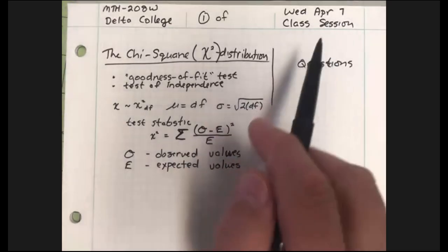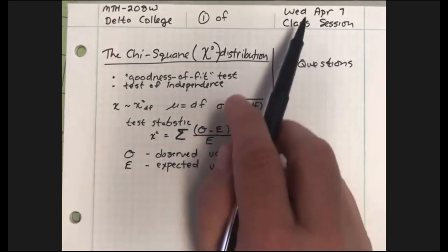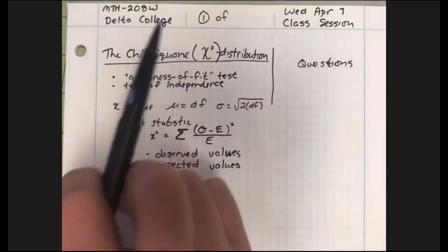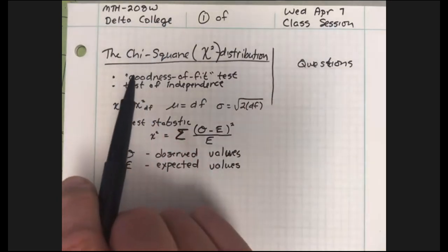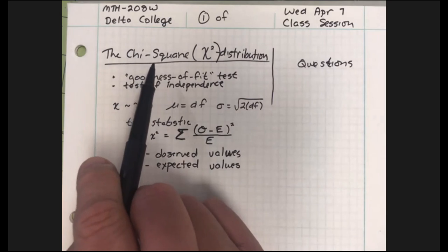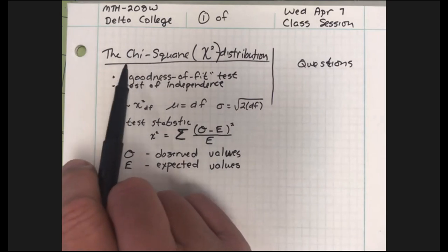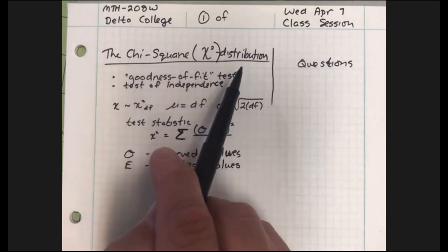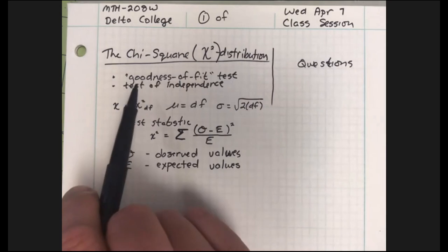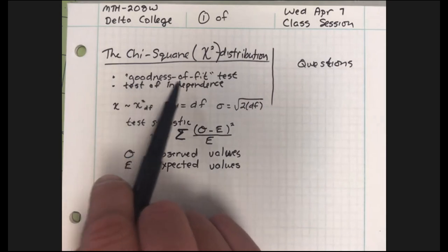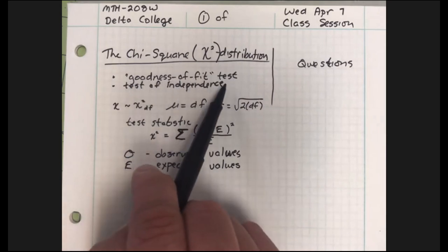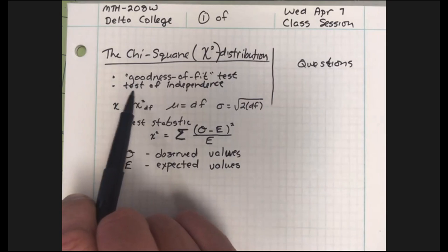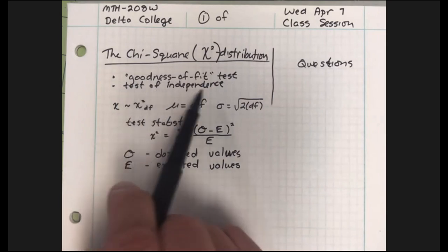Welcome everybody. Wednesday, April 7, Math 208, our statistics class. We've got some really nice examples for you today of the chi-square distribution. Last time we did an example of what was called goodness of fit, and today we're going to do another example called test of independence.